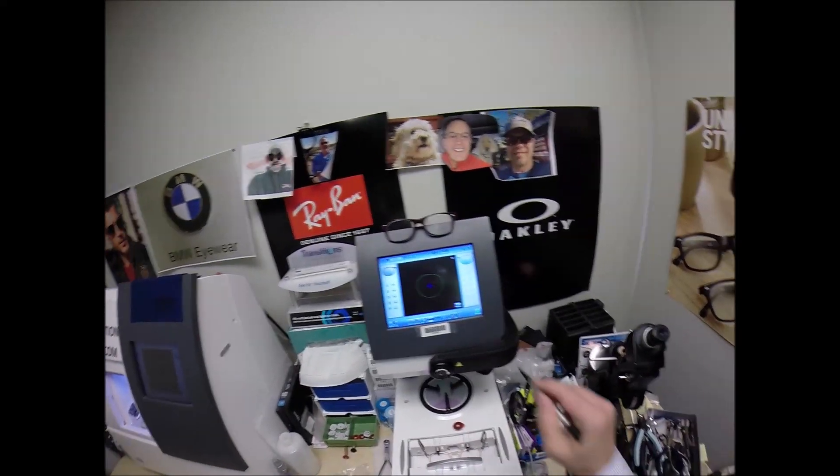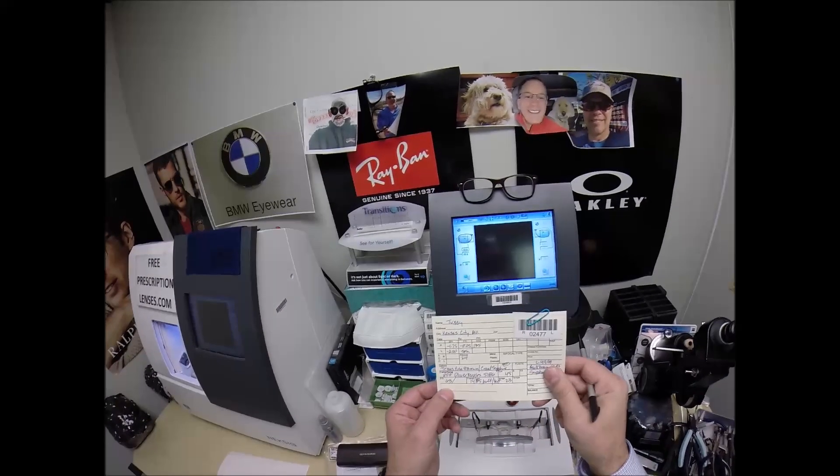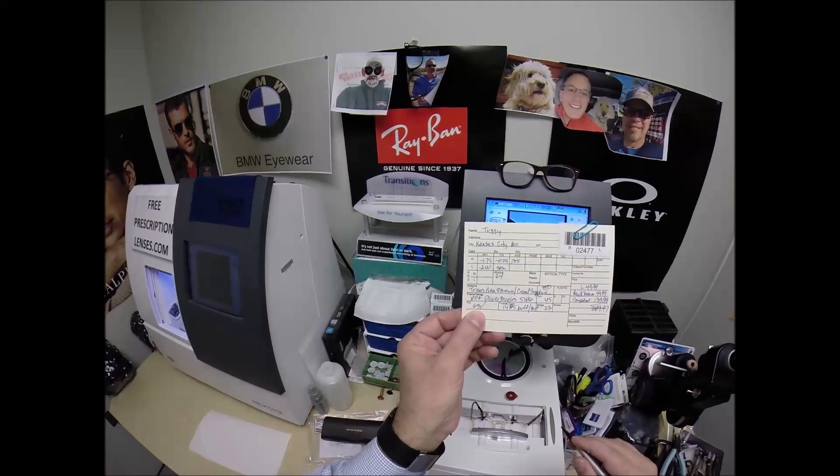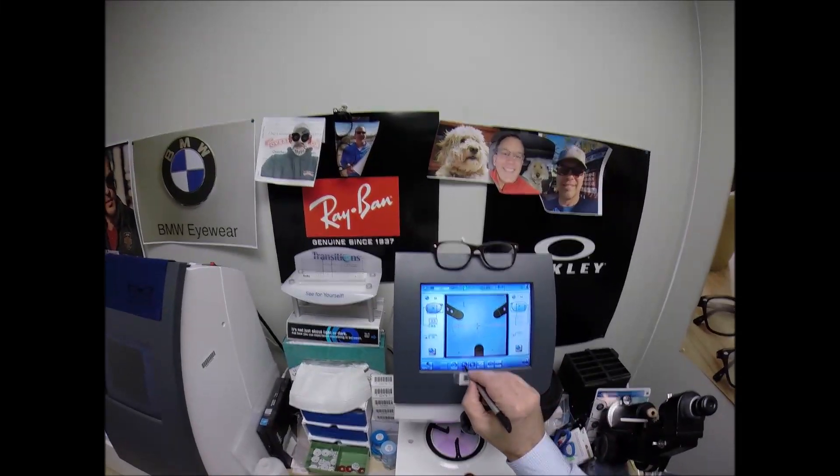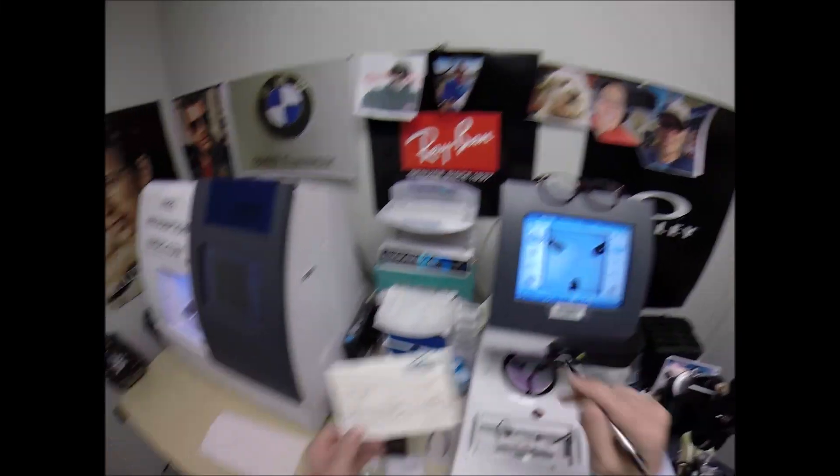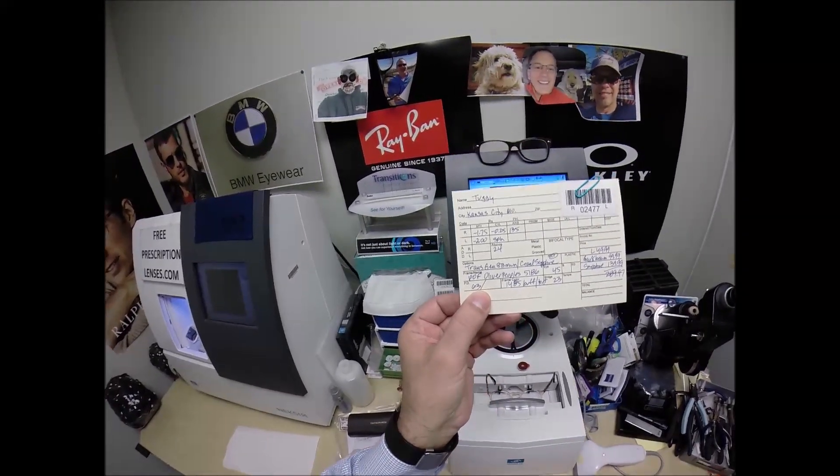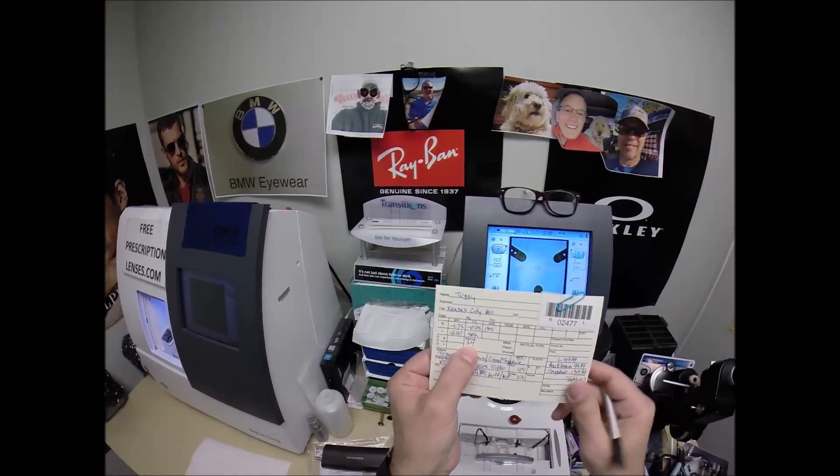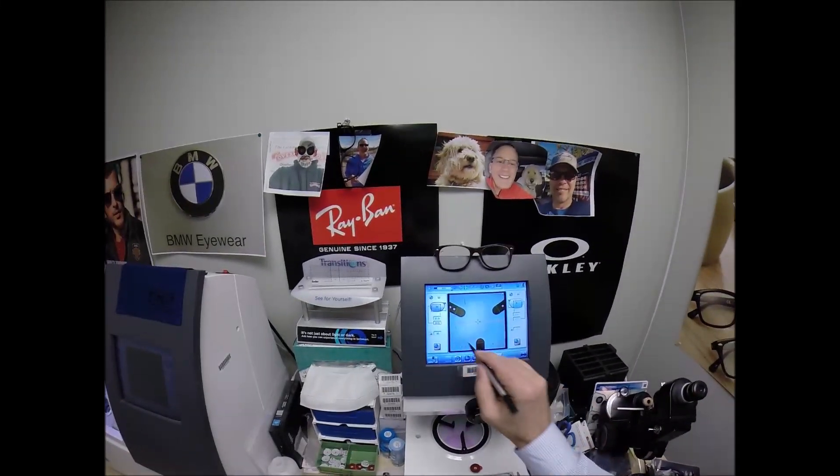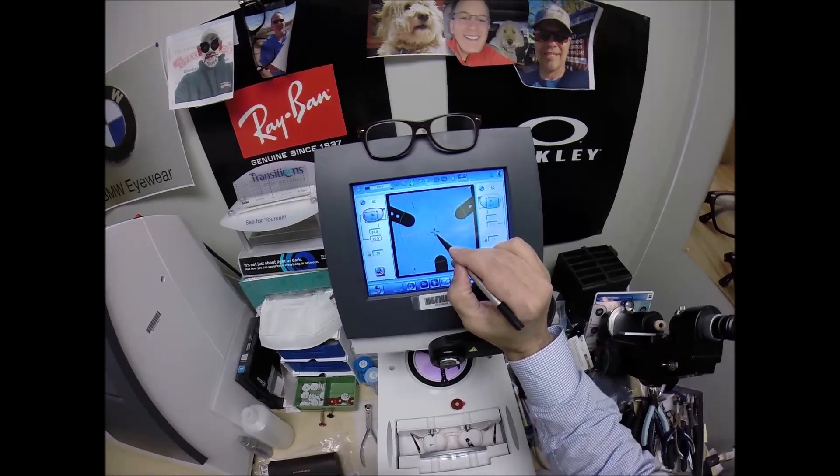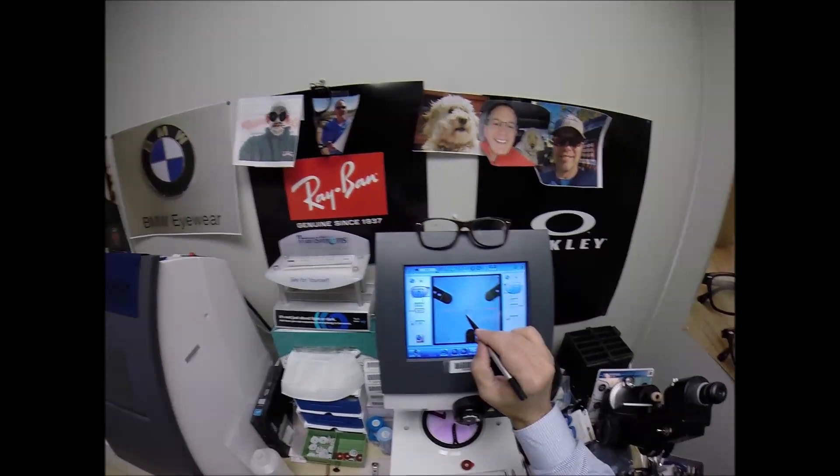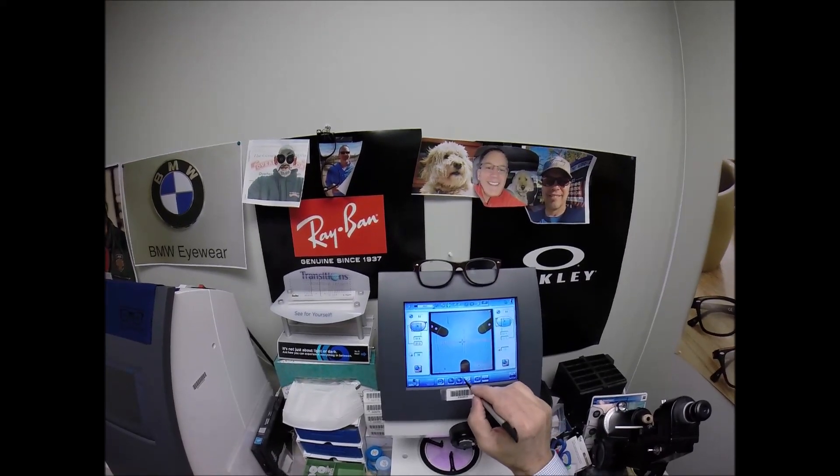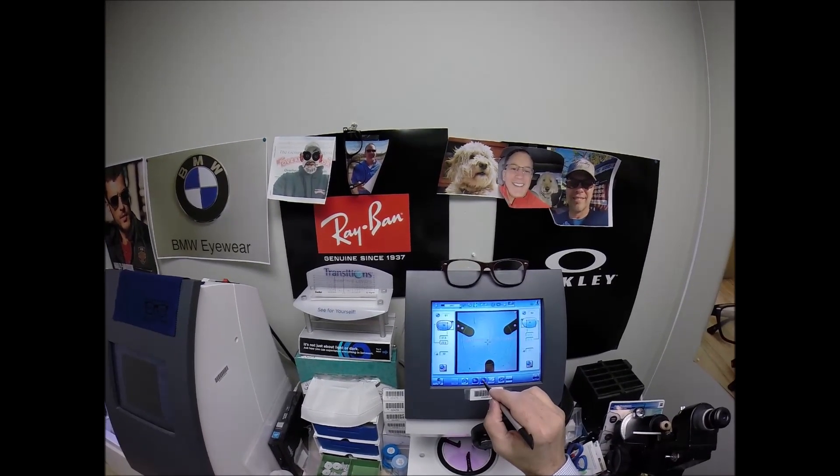I need to program the shape we'll be cutting, your pupillary distance which is 63 divided by 2 is 31.5. Since you have two eyes, we're going to raise the optical center height up to 24. The blue cross is the geometric center of your frame. Your eye is actually just next to that, but I'm going to raise the optical center height up to 24.